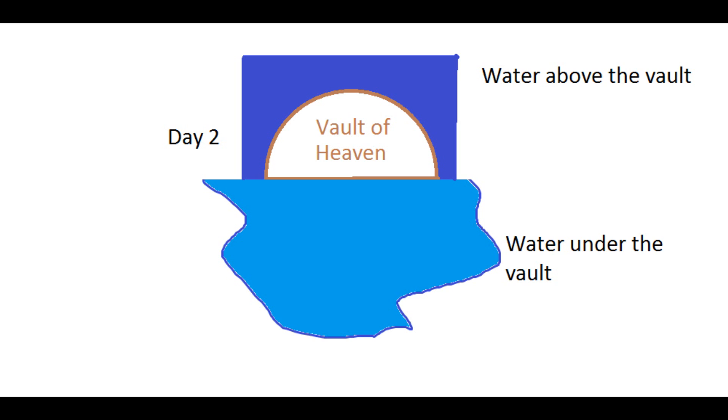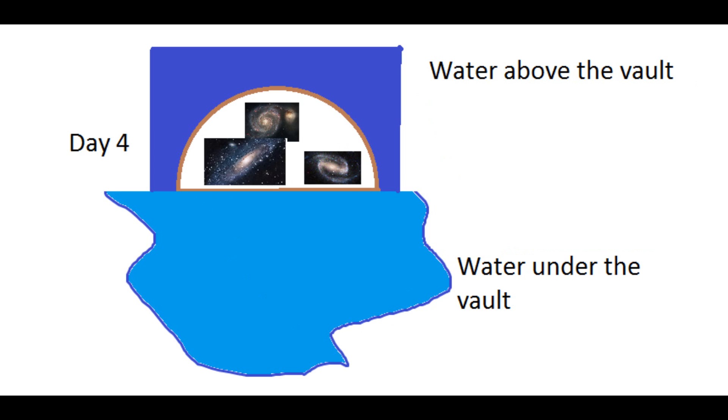The water under the vault becomes the ocean on day 3. While Genesis is eerily silent about what happens to the water above the vault, although it presumably is the water that we experience as rain, the real issue comes on the fourth day because the passage says that the sun, moon, and stars were placed in the vault of the sky.